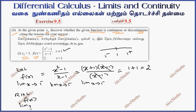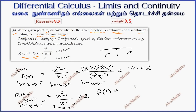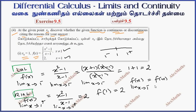The right-hand limit as x approaches 1 plus also gives 2. The function value f(1) is also 2. The limit value exists, and the left-hand limit equals the right-hand limit. Therefore, limit as x approaches 1 minus equals limit as x approaches 1 plus equals f(1). Therefore, it is continuous at x equal to 1.